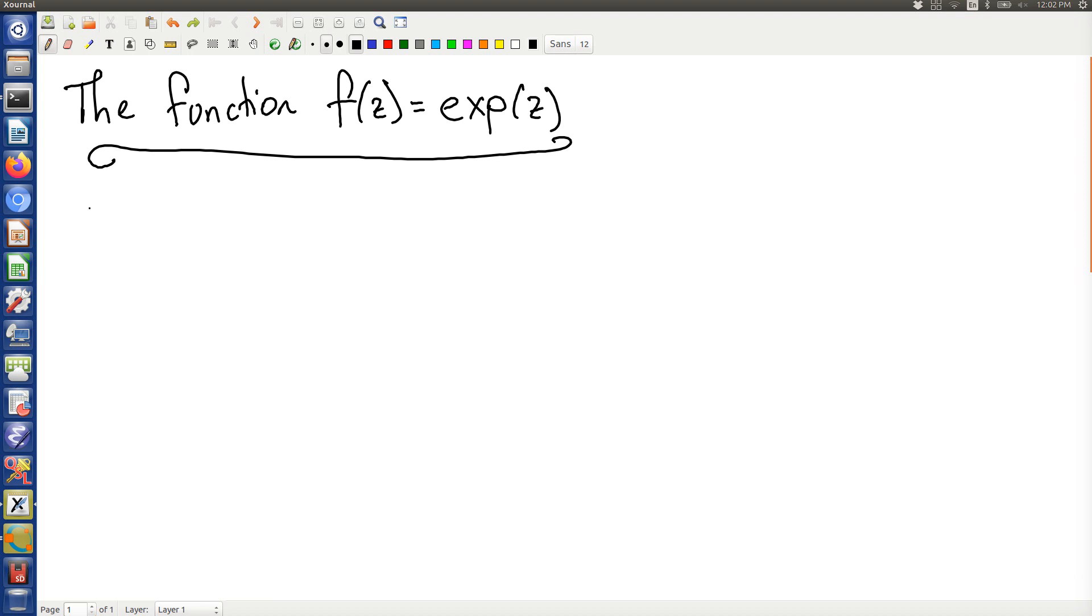So the best way to think about e to the z is making use of real and imaginary parts. So x and y are both real.